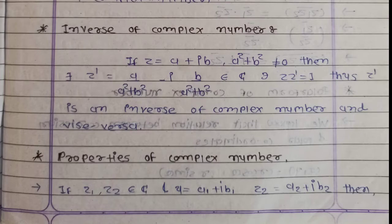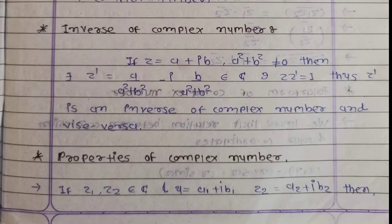i is equal to square root of minus one, that means i square is equal to minus one. For the conjugate of a complex number: z bar of z is equal to — if z is equal to a plus iB, then z bar is equal to a minus iB. This z bar is the conjugate of z.